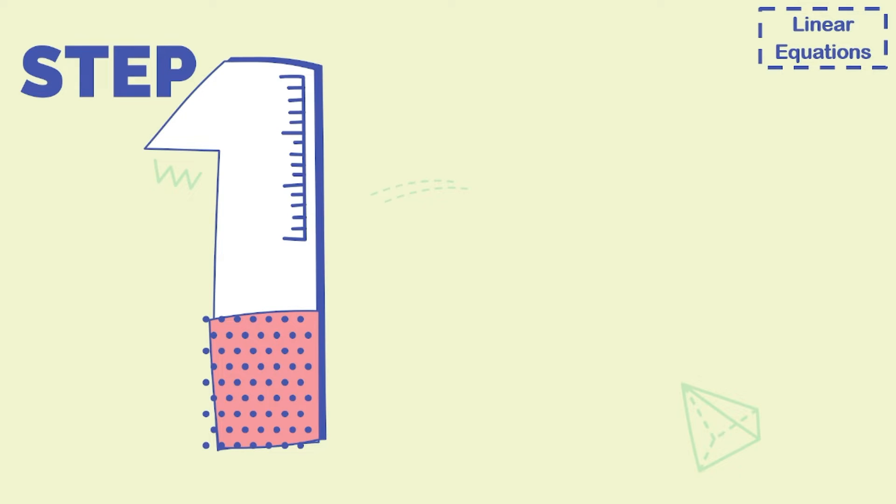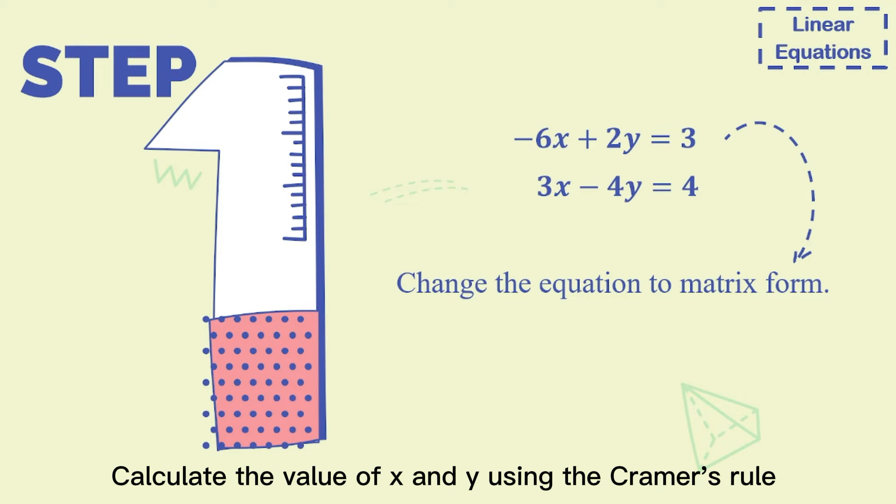For the first step, change the equation to matrix form. Calculate the value of x and y using Cramer's Rule.